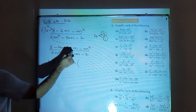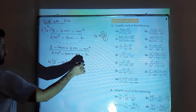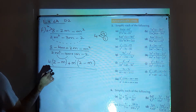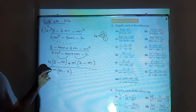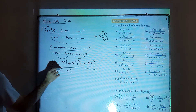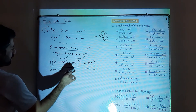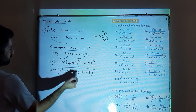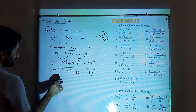In the denominator, take out 2m as common from the first two terms, leaving (m minus 2); from the next two terms, take out 1, leaving (m minus 2) inside the bracket. So the numerator becomes (4 plus m)(2 minus m) and the denominator becomes (2m plus 1)(m minus 2).